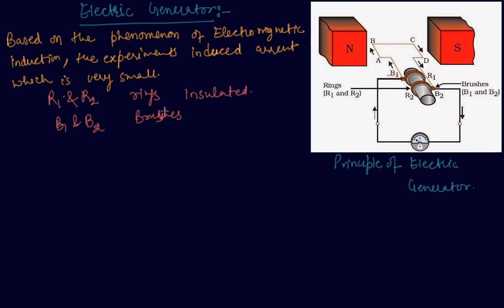The axle may be mechanically rotated from outside to rotate the coil inside the magnetic field. When the axle attached to the ring is rotated such that the arm AB moves upward in the magnetic field produced by the permanent magnet, using Fleming's right hand rule, the coil ABCD rotates in this direction.